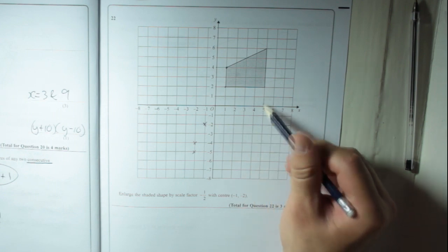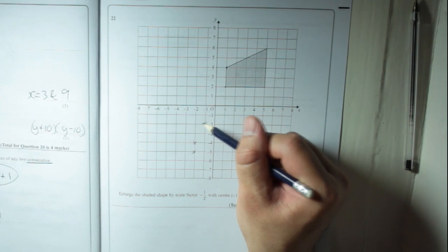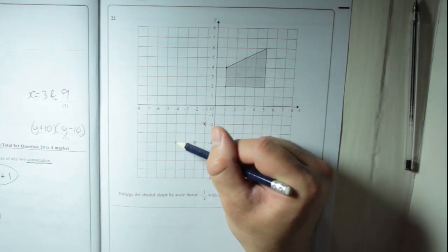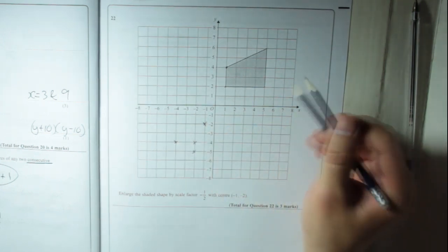So remember it's 6 right, 4 up. So it's 3 left, 2 down. So 1, 2, 3, 1, 2. So that's that one done.